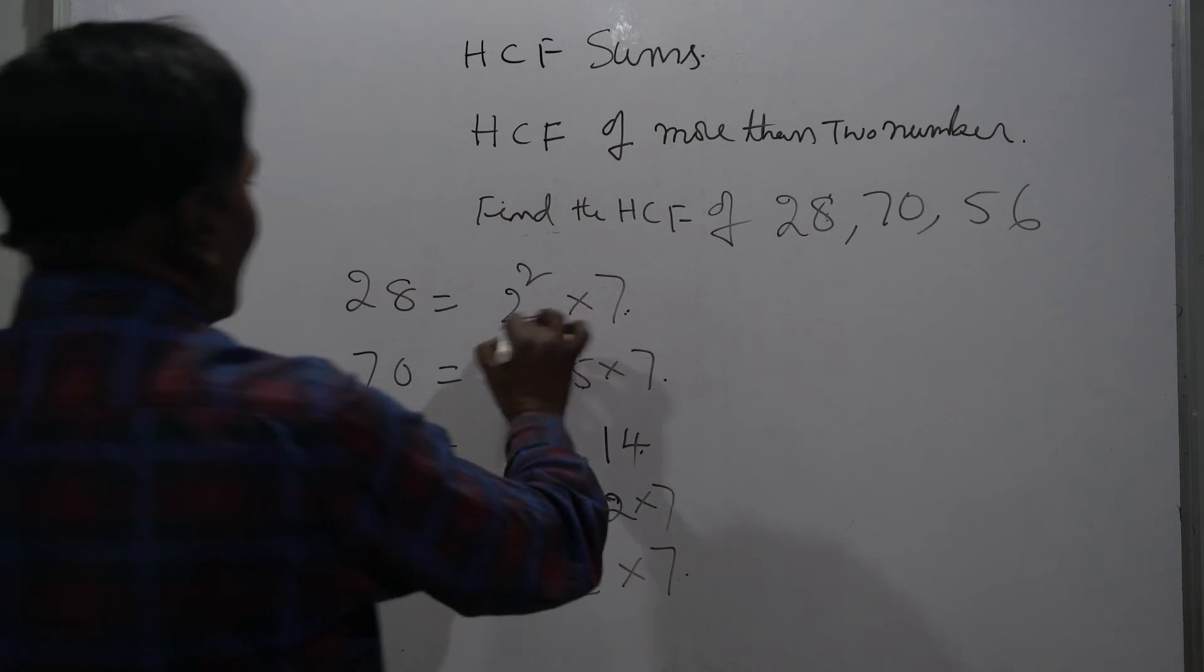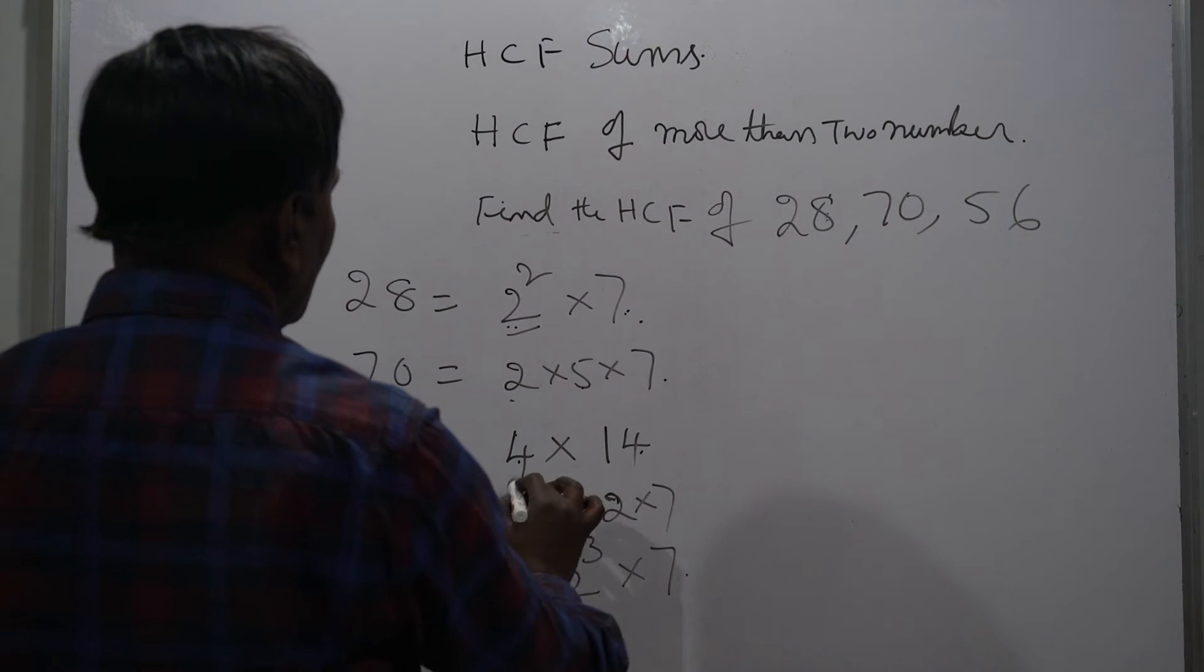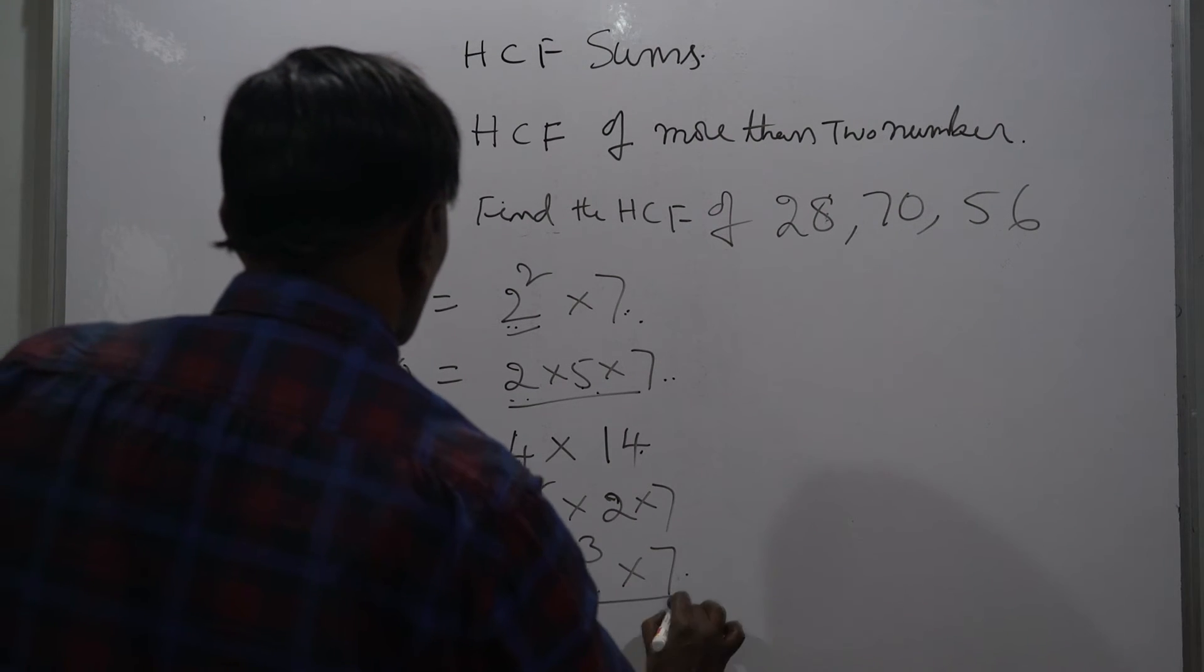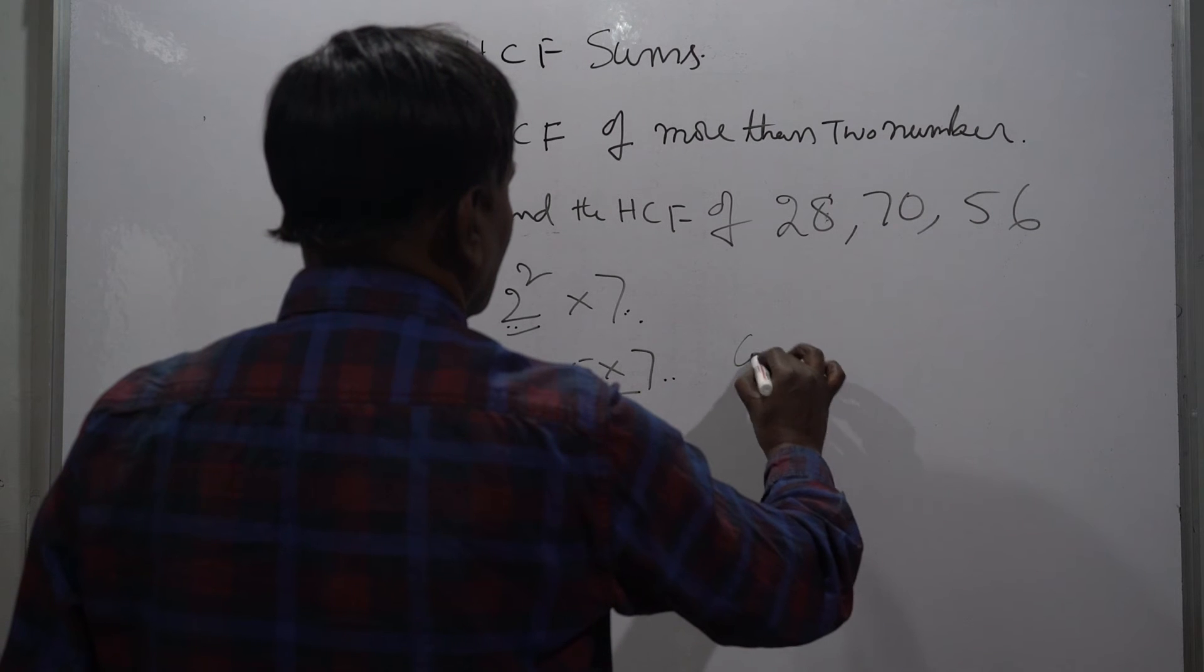These are prime factors: 2 squared into 7. This is 2 into 5 into 7. This is 2 cubed into 7. So we have to take the common factors.